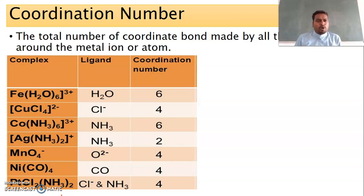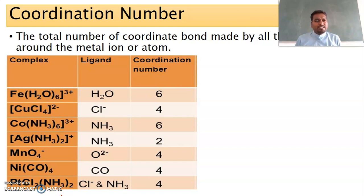That is, whether the ligand is monodentate, bidentate, or tridentate — because all ligands cannot form the same number of bonds. Monodentate ligands form only a single bond, bidentate form two bonds, tridentate form three bonds, tetradentate form four bonds, and hexadentate form six bonds. Like this, if the ligands vary, their bonding nature varies. You must know how many lone pairs of electrons are donated by the ligand to the central metal atom. Let us see some examples to understand the coordination number.